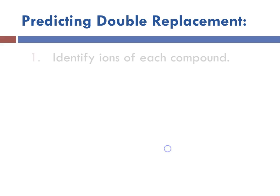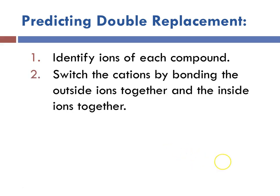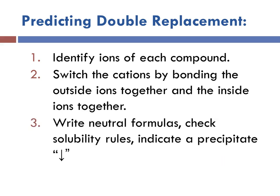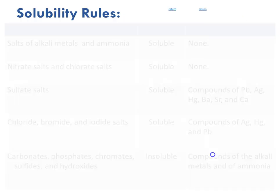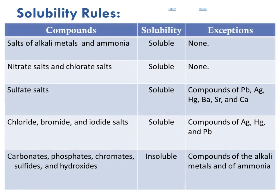For predicting double replacement, the first step is to identify the ions for each compound. The second step is to switch the cations by bonding the outside ions together and the insides together. Third, figure out after you write your neutral formulas if something is insoluble or molecular. If it's insoluble, indicate that it's a precipitate with a downward arrow. And finally, always balance the equation. To know if something is insoluble, we check solubility rules. You'll always get the solubility table on a test or worksheet, so you won't be expected to memorize it.